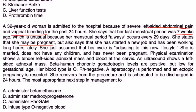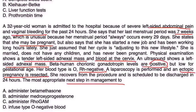She is married, does not have any kids, has never been pregnant. Physical exam shows tender left-sided adnexal mass and blood at the cervix. An ultrasound shows a left-sided adnexal mass. Beta-HCG levels are positive but low for gestational age. Blood type is O Rh negative. A laparoscopy is performed and an ectopic pregnancy is resected. She recovers from the procedure and is scheduled to be discharged in 24 hours. Most appropriate next step is...